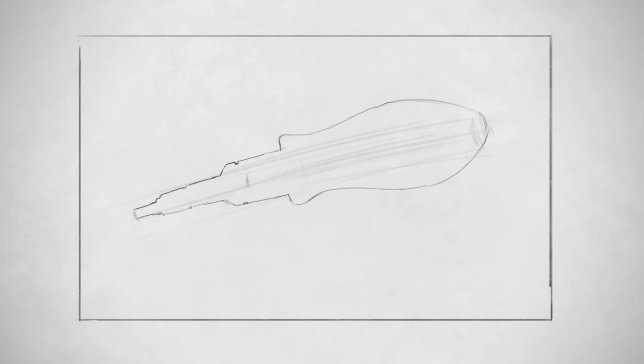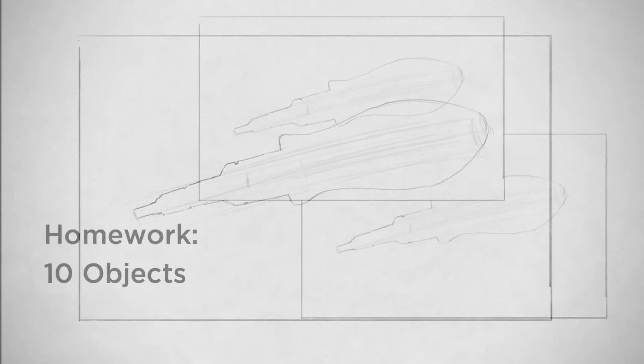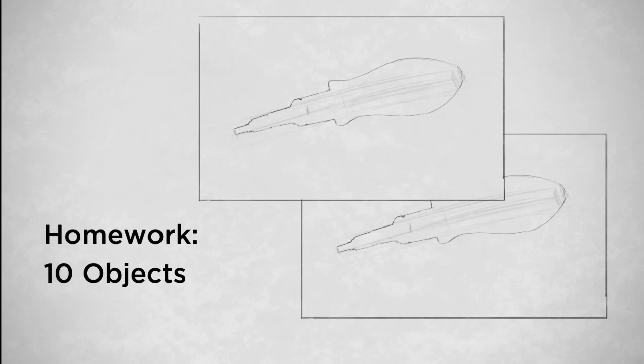And it can be hard to do, but this is an important step in observational drawing. So the homework this time is really straightforward: pick 10 relatively simple objects, put them in front of you, and just do a careful contour drawing.